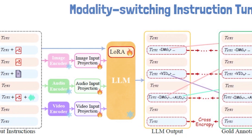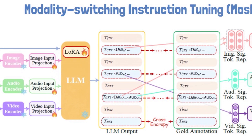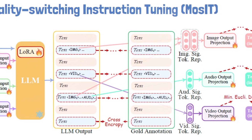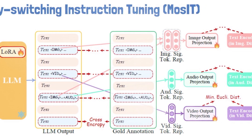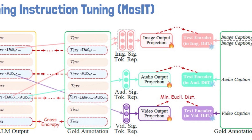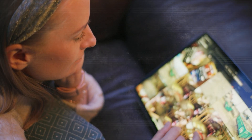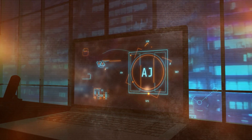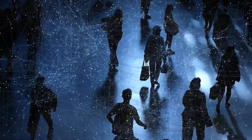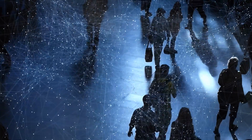NextGPT also has another unique feature: its ability to switch between different modes of communication intelligently, thanks to something called Modality Switching Instruction Tuning, or MOSAT for short. This means the AI can take a task, break it down into several steps involving different forms of communication, and carry it out efficiently. It could reinvent chatbots and virtual assistants, making them more intuitive and interactive, and it can be a game-changer in education and entertainment, creating immersive and engaging content based on individual inputs.